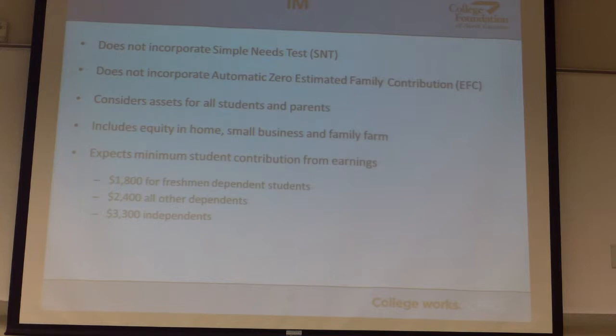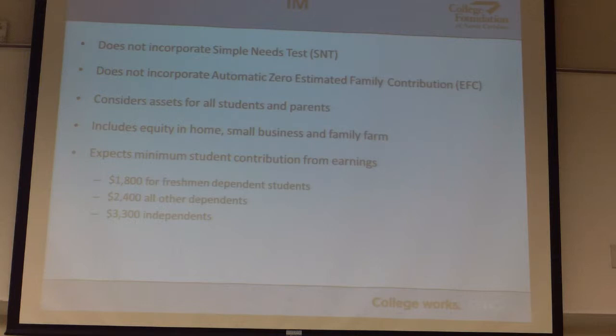These minimum contributions actually vary by school — we have different numbers at Duke. But even for a family who we say has no ability to contribute whatsoever, there's a minimum contribution from the student that roughly equals our budget and cost of attendance for miscellaneous. We cover things that are billed and we cover books usually with our grant aid, and then the student contribution piece is usually what we've built in for their spending money. We do expect a student to contribute that portion — we let them know and put it in our cost of attendance.